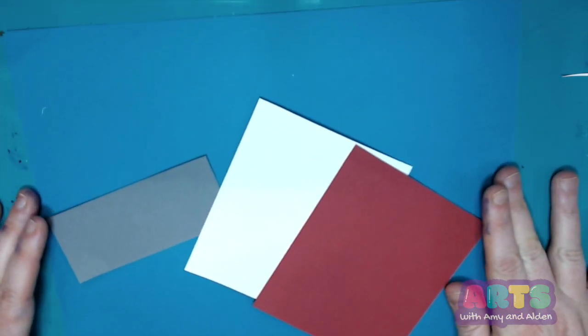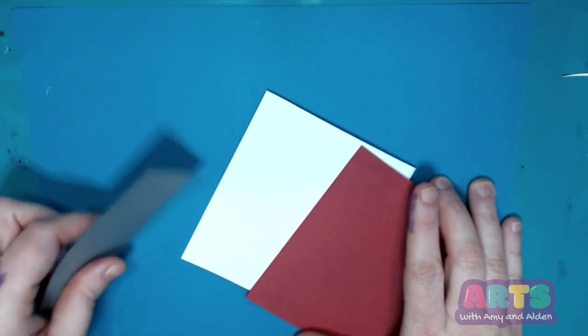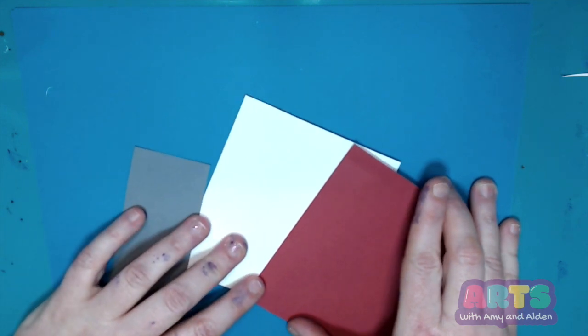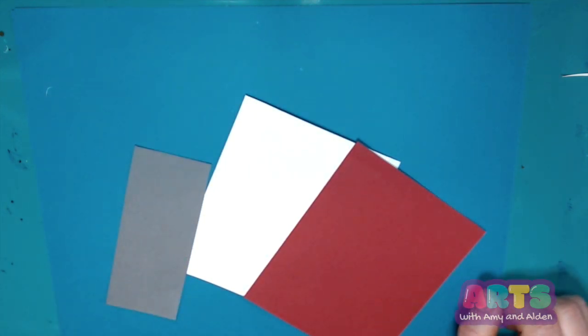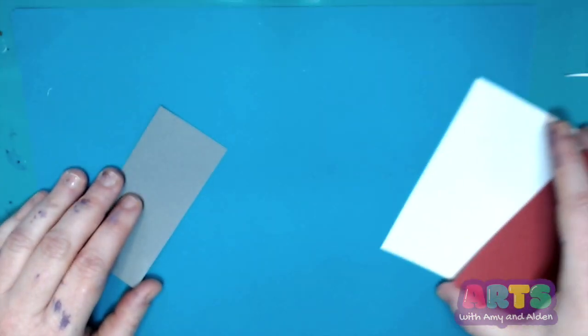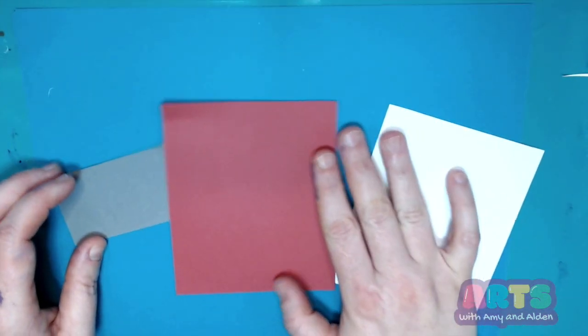paper, so I have a white and red piece that are kind of a square shape, and then I have my gray piece of paper for the top of the can. I know gray papers are kind of hard to find, so if you can't find one, just get a piece of white paper and color it gray if you